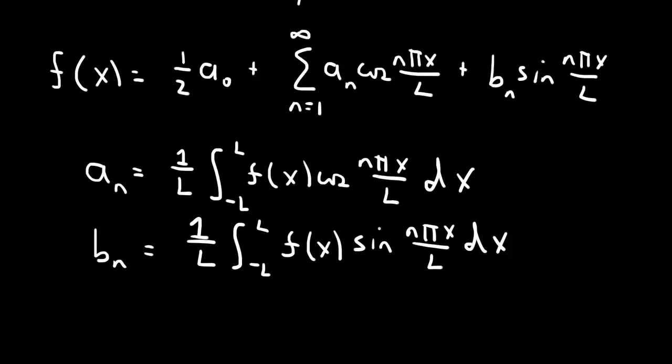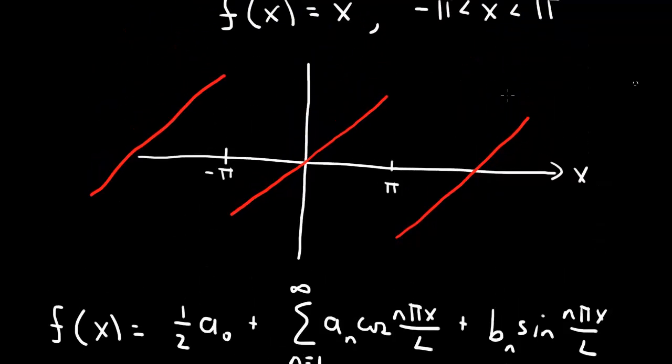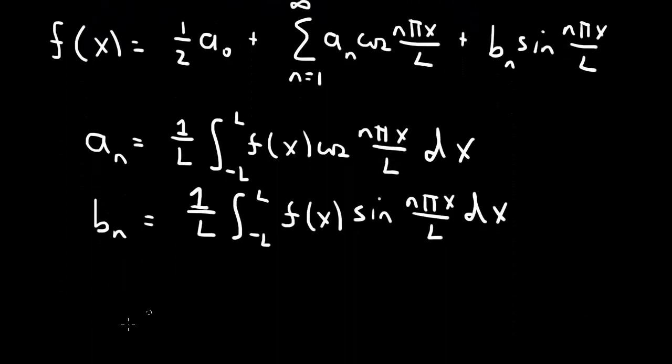So now our function is f of x equals x. And this is an odd function. So f of negative x, here, this value here, is negative f of positive x, this value here. So this is opposite sign. So f of x is an odd function.